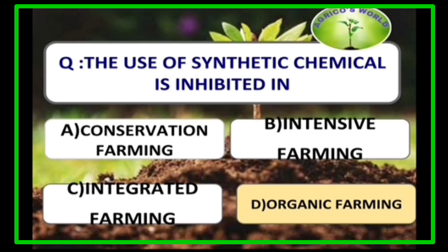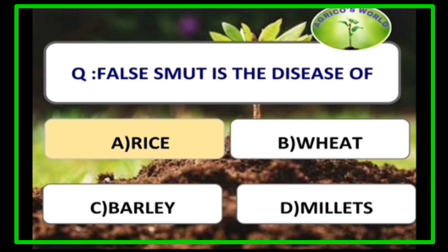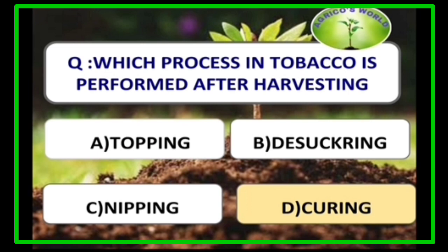The use of synthetic chemicals is prohibited in organic farming. False smut is a disease of rice. In tobacco, curing is performed after harvesting to impart colour and aroma to the harvested leaves.